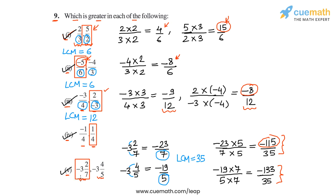An alternative way we could have compared these two numbers is by noting that the integer parts of both numbers are the same — we have -3 and -3 in both. So I'll leave it to you as an exercise to figure out how, just by comparing the fractional parts, we can say that the first number is greater than the second number. With this, we have completed question number 9.